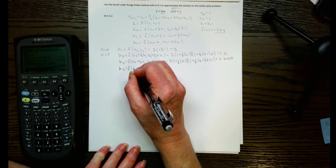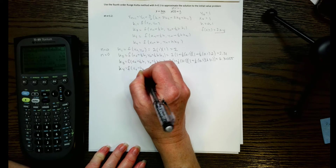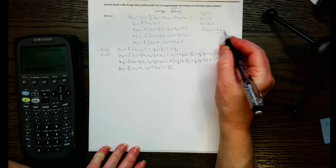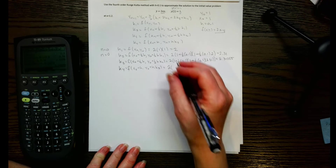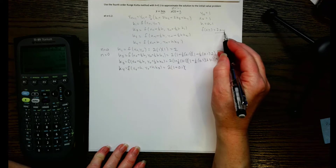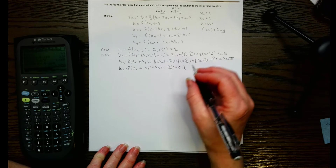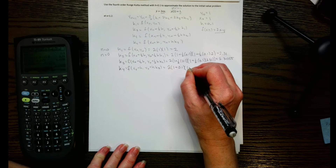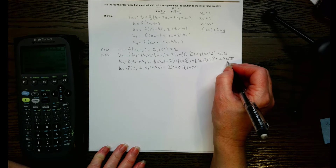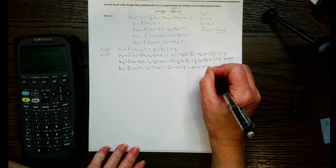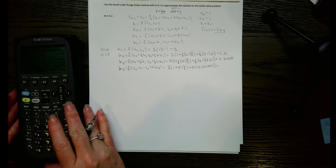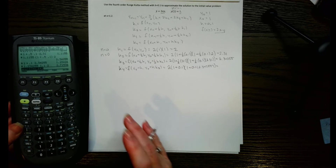Now let's go to our last k, k4. We're going to have our function with x0 plus h and then y0 plus h times k3. So we have 2 times x0 plus h — that's 1 plus 0.1 — times y0 plus h times k3, which is 1 plus 0.1 times 2.34255. Calculating that, we get k4 = 2.71536.